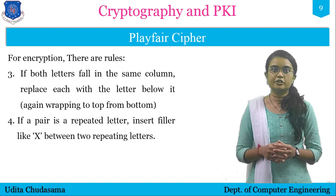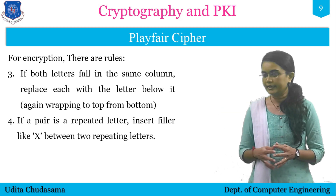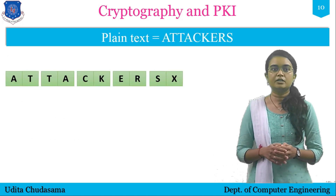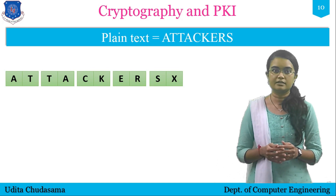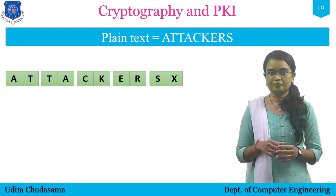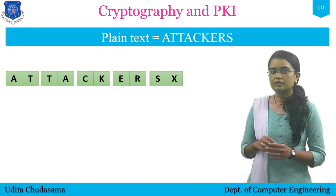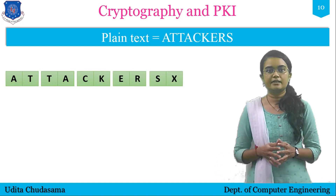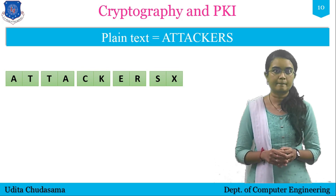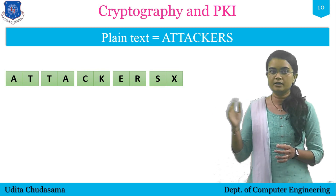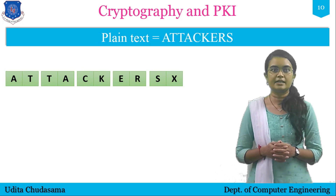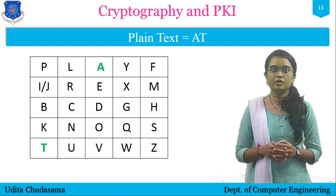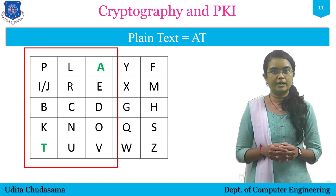Now we start the encryption process for plain text 'attackers' with key 'playfair example'. Step one: pair up the characters — AT, TA, CK, ER, and the last letter S gets an X appended to complete the pair SX. Now encrypting each pair. For the pair A, T: we locate A and T in the matrix and form a rectangle with those two corners. We find the letter in the same row as A at the other corner of the rectangle, giving cipher text P for A, and V for T. So AT encrypts as PV.